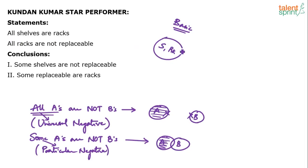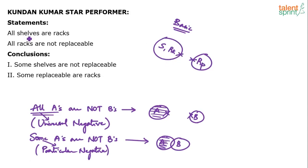All shells are RACs — easy to draw. All RACs are not replaceable, so RACs and replaceable will not overlap. Since shells and RACs are equal in this context, shells and replaceable will also not overlap. All shells are RACs means shells is essentially equal to RACs.